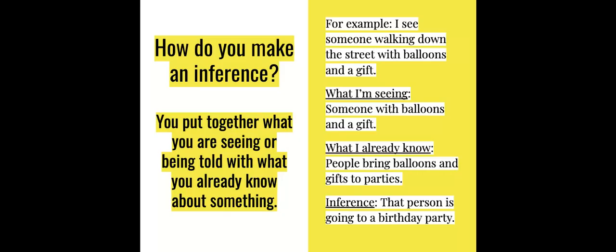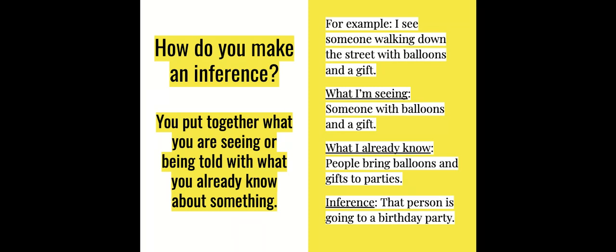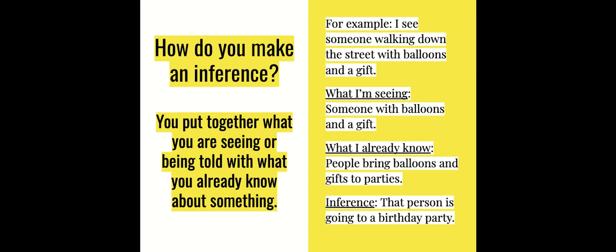So how do you make an inference? You put together what you're seeing or what you're being told — for us, that's what you're reading in the text — and then what you already know about something. You put those two together and you make an inference.